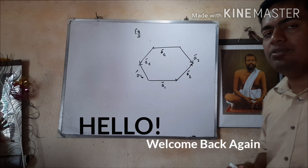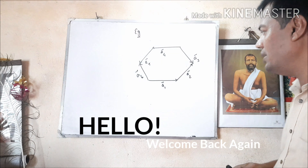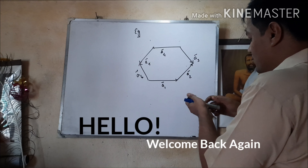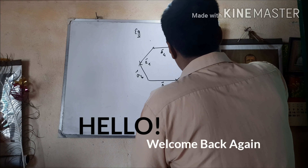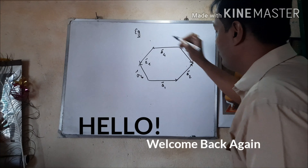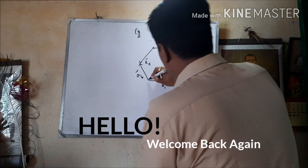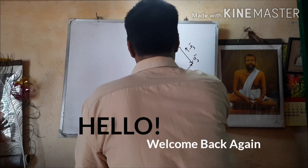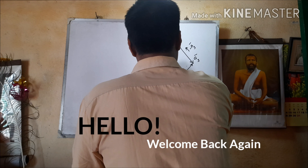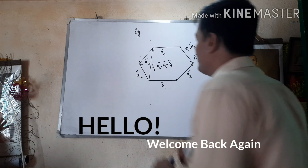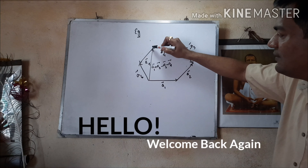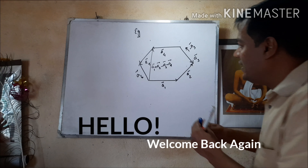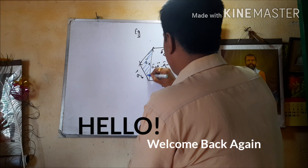Consider five coplanar vectors: a1, a2, a3, a4, and a5, with all the usual restrictions imposed. To add these five vectors using the polygon rule, since there are five vectors, the polygon must have n plus one, that is six sides. The last side taken in the opposite order will represent the resultant.